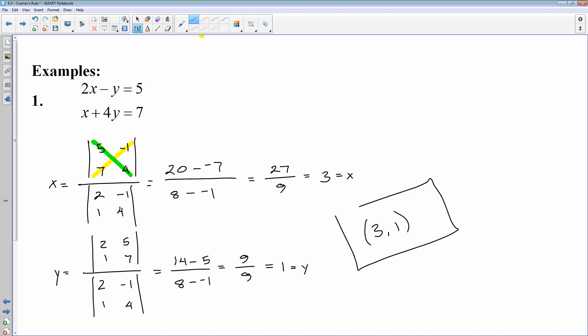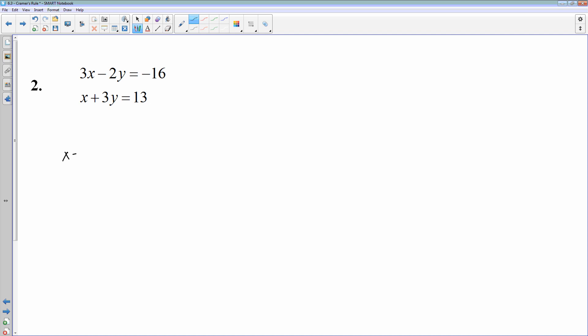Let's do another one. Two equations, two variables. So let's set up for X. The bottom matrix is always really nice because it's the coefficients as they originally are. 3, negative 2, 1, 3. And then on top, since I'm solving for X, I'm going to replace the 3 and the 1 with negative 16 and 13. And then negative 2 and 3 are going to stay the same.